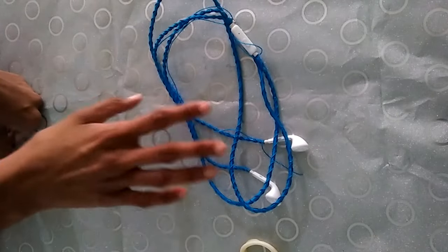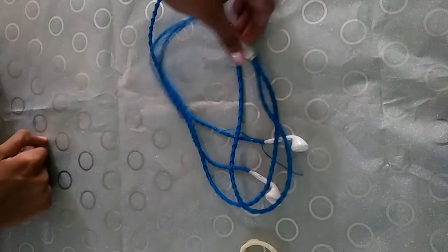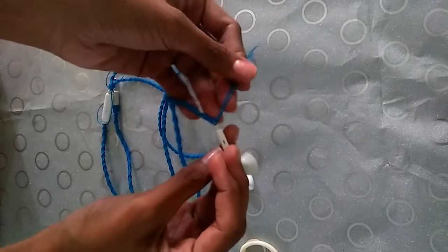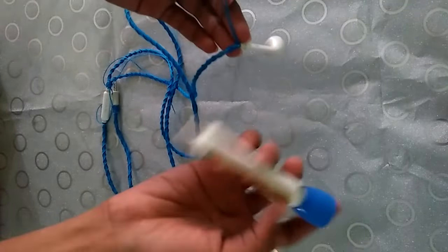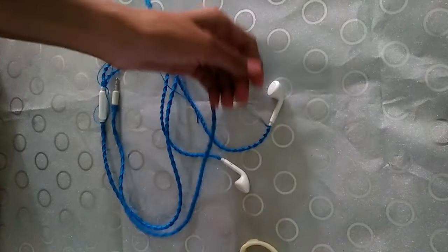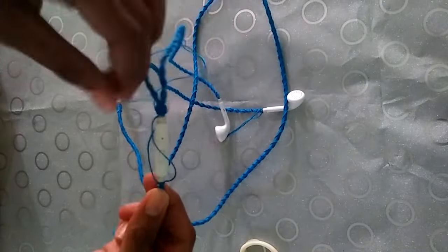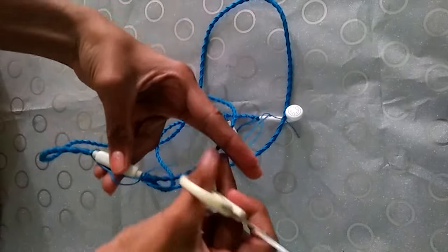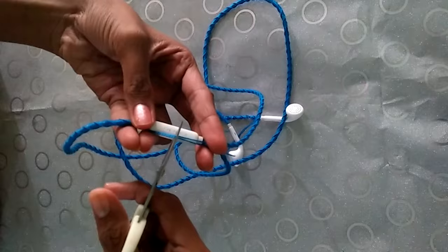So what we're gonna do now is we just have to secure the little thread pieces we left here with some glue. I use fabric glue. Since this is yarn, fabric glue works better. So we just have to cut these parts now into shorter pieces.